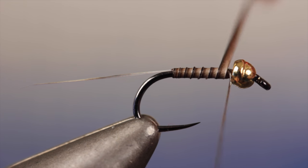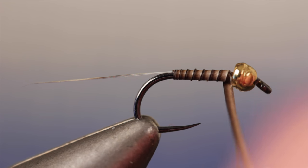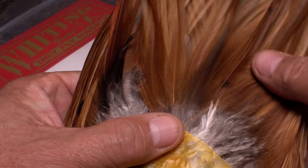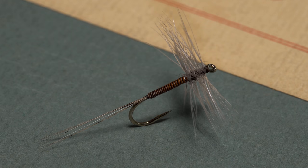Stripping quills for quill-bodied flies isn't difficult, but it can be a little time-consuming. Quills from the stems of hackle feathers create beautifully segmented classic fly bodies.